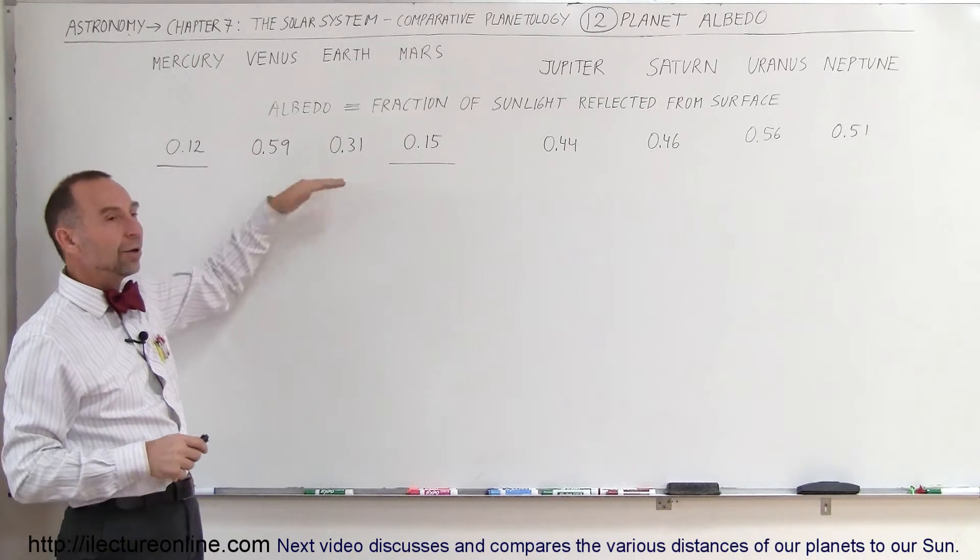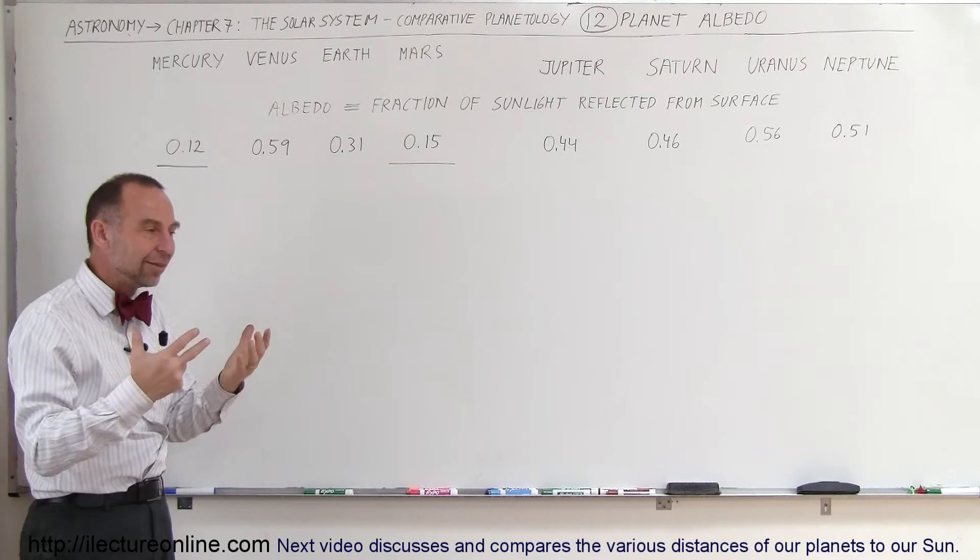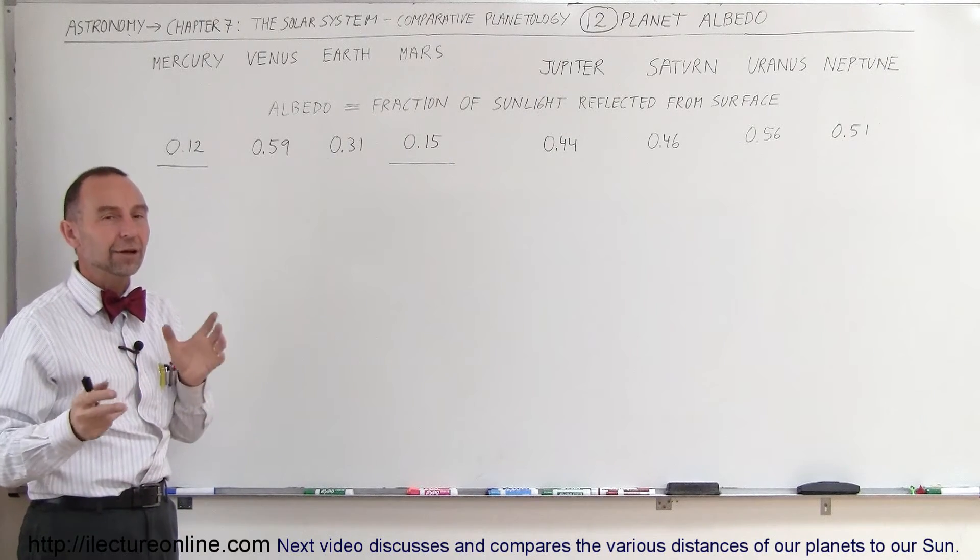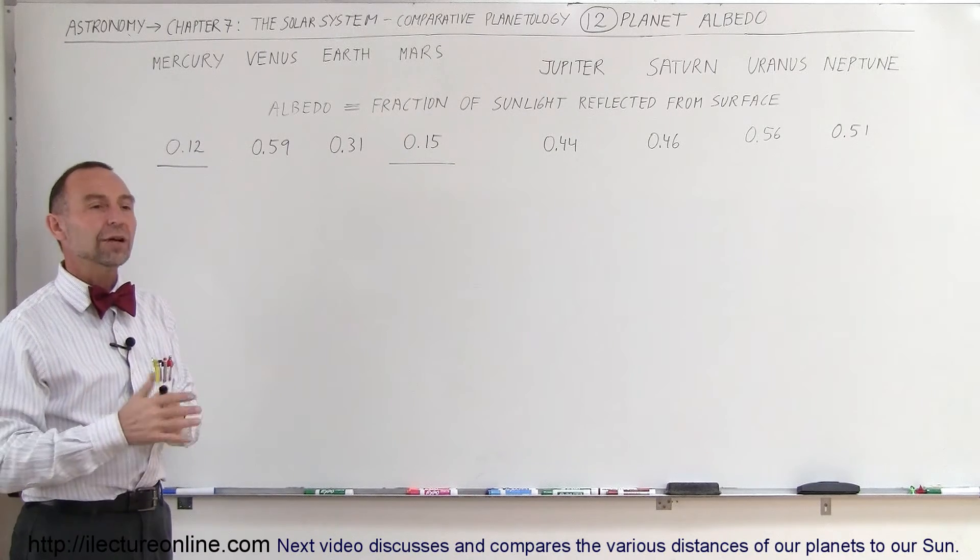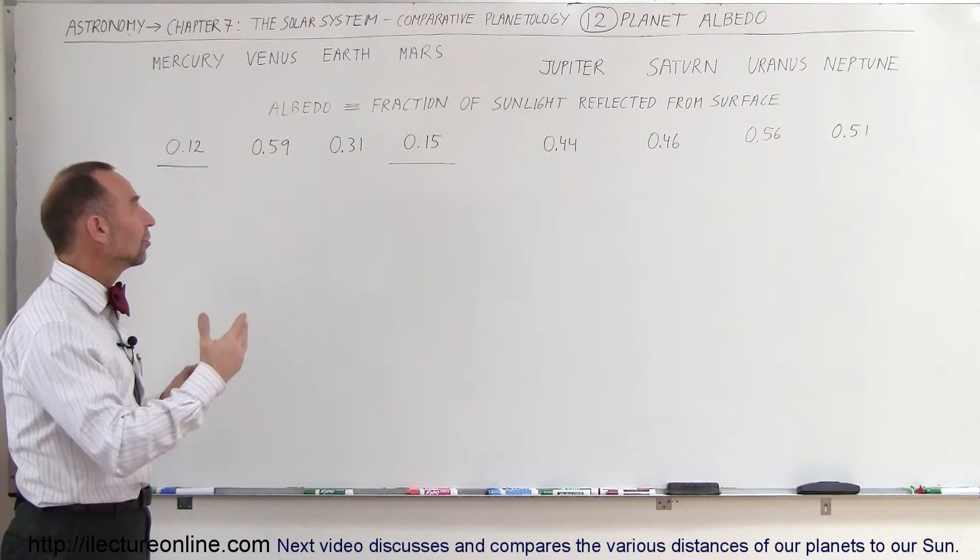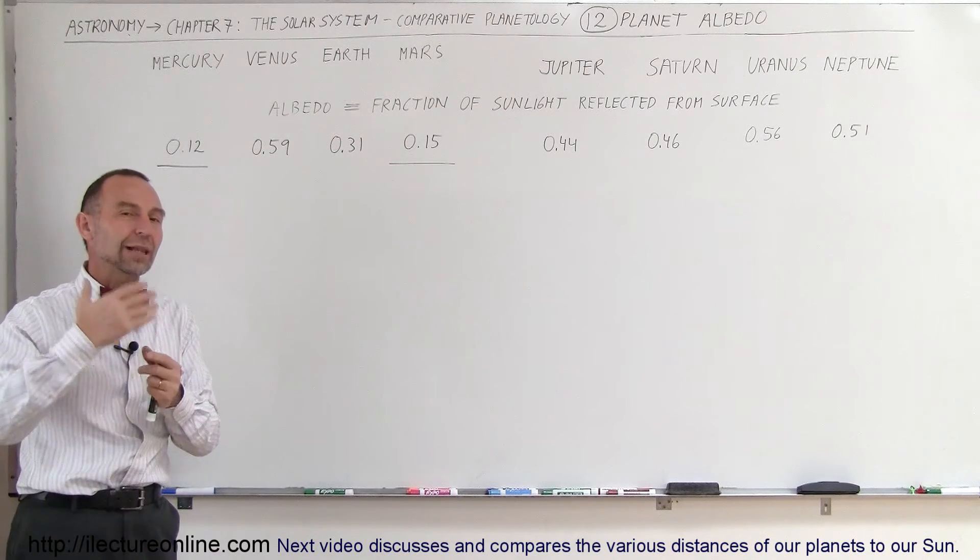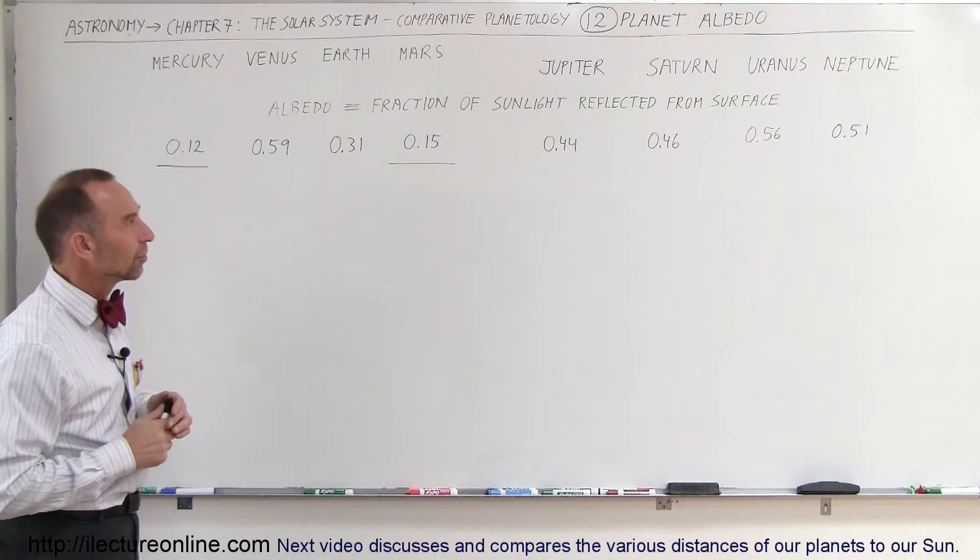Earth is a mixed bag. Earth has oceans. It has land. And then it has a lot of cloud cover. But it's not completely covered over, and the atmosphere is not that thick, and so therefore, only about a third of the light coming in from the sun gets reflected back into space.